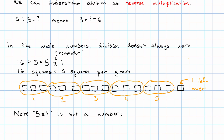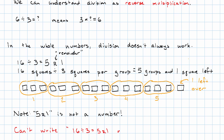This little r I read as remainder. Notice: five remainder one is not a number. What we're saying is that 16 squares divided by three squares per group gives us five groups and one square left — one square remaining. That means I can't write that three times 'five remainder one' is 16, because I can't do multiplication to five remainder one, because it's not a number. Later on, we will learn some ways of expressing that.